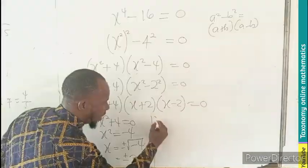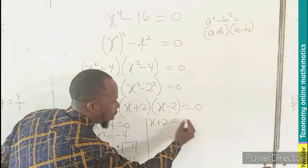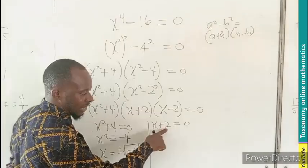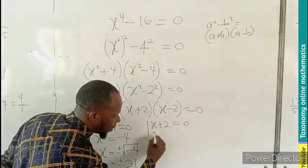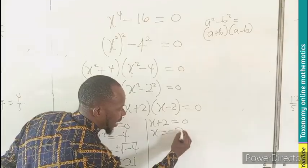then we have become x plus 2 equals to 0, subtracting 2 from both sides, making x equal to minus 2.